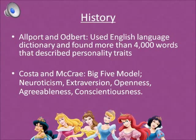This leads us to the history of the Big Five. The lexical hypothesis assumes important human traits will be represented in different languages and have many different synonyms. Allport and Odbert used the English language dictionary and found more than 4,000 words that described personality traits. Cattell reduced those 4,000 terms to about 171 characteristics, used factor analysis to identify traits closely related to one another, and lastly reduced his list to 16 key personality factors.